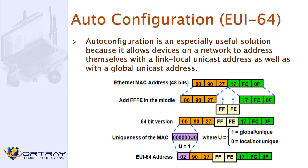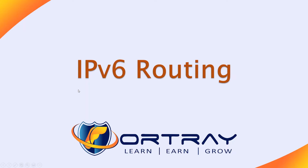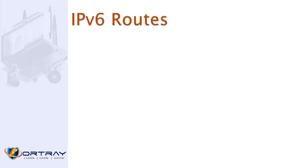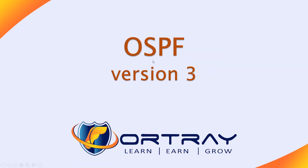This makes your configuration easier because you need to type fewer numbers — that's why auto-configuration with EUI-64 is useful. For IPv6 routing, a default route can be configured with 'ipv6 route' pointing to the GigabitEthernet zero interface, and static routes can also be configured as well.